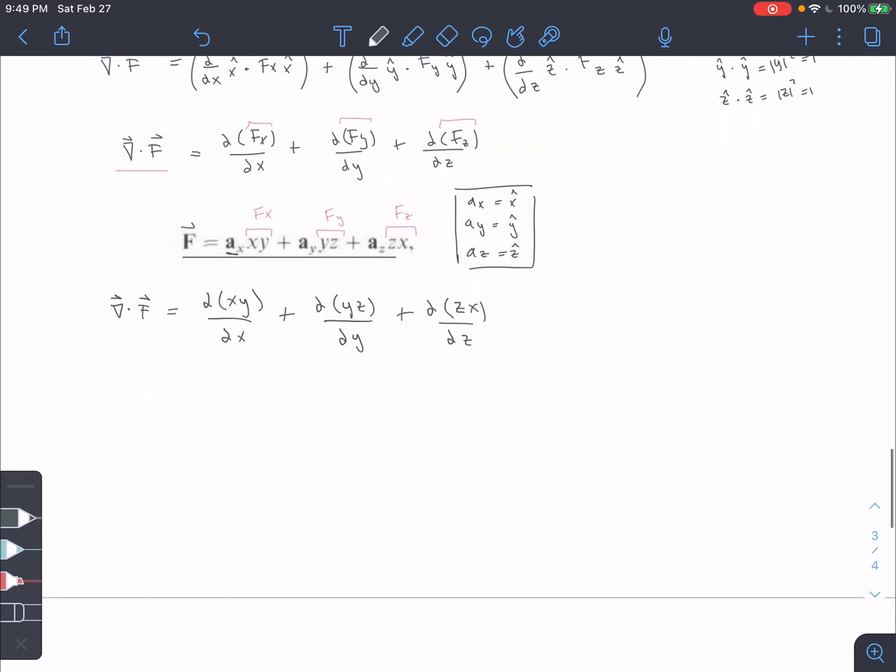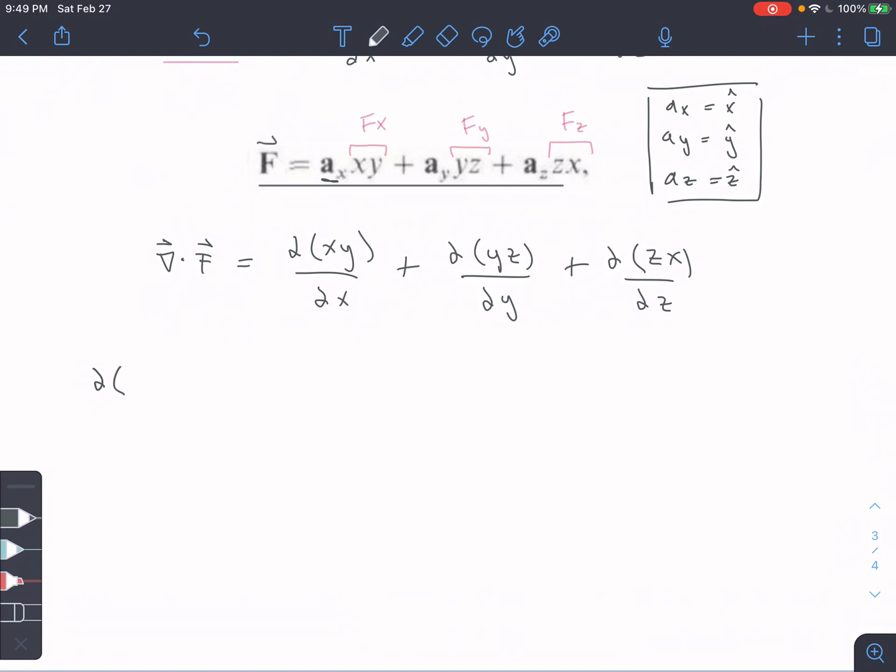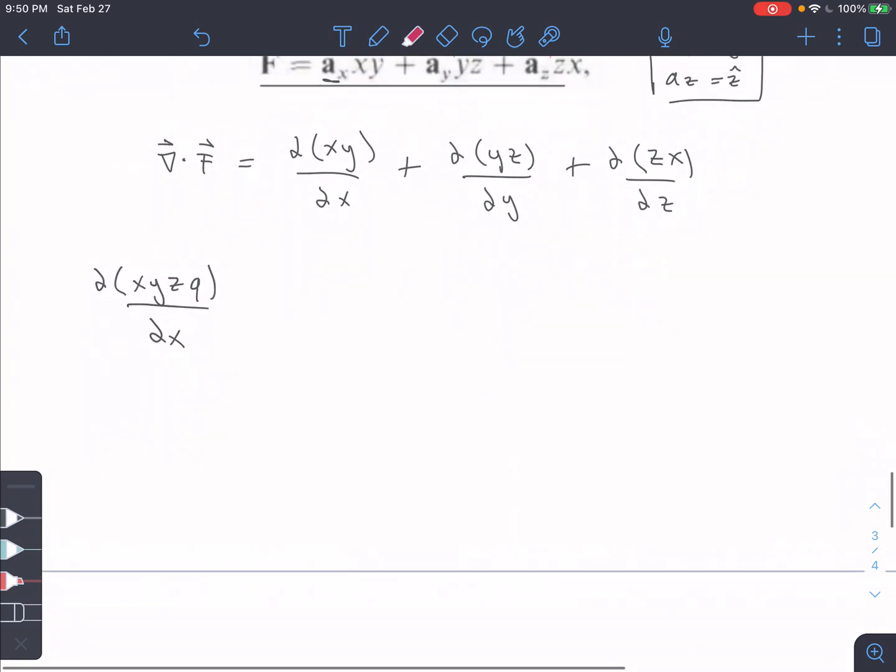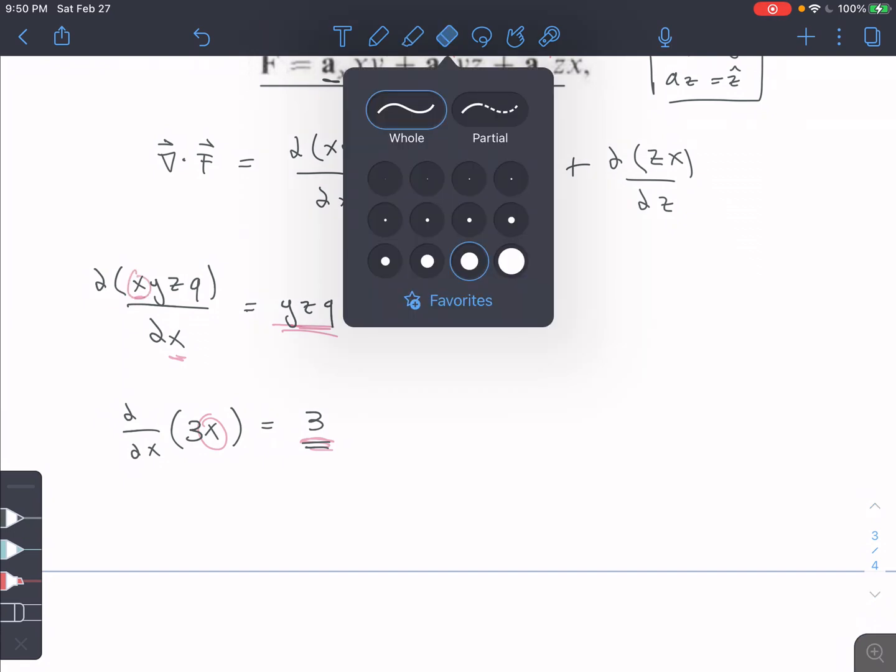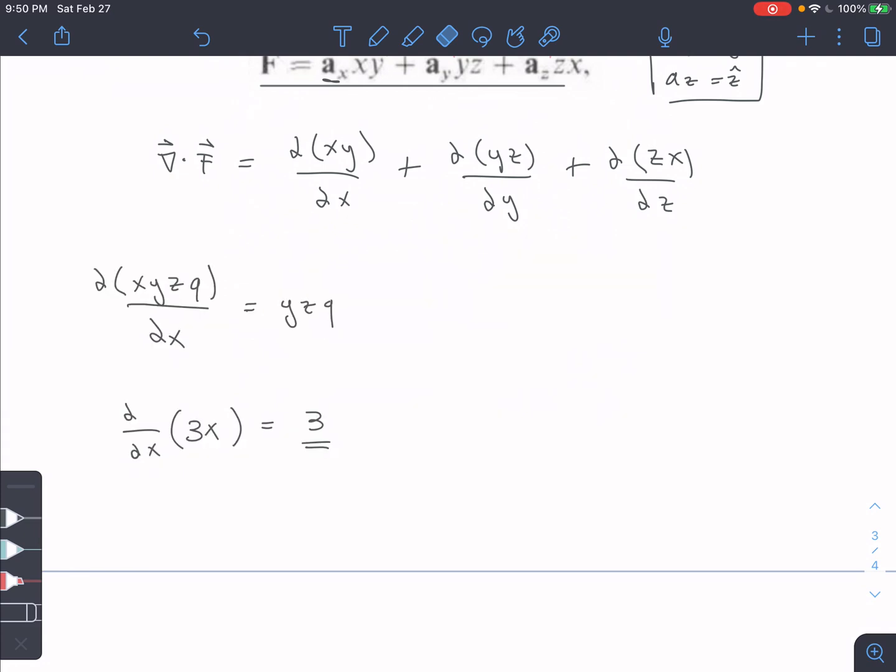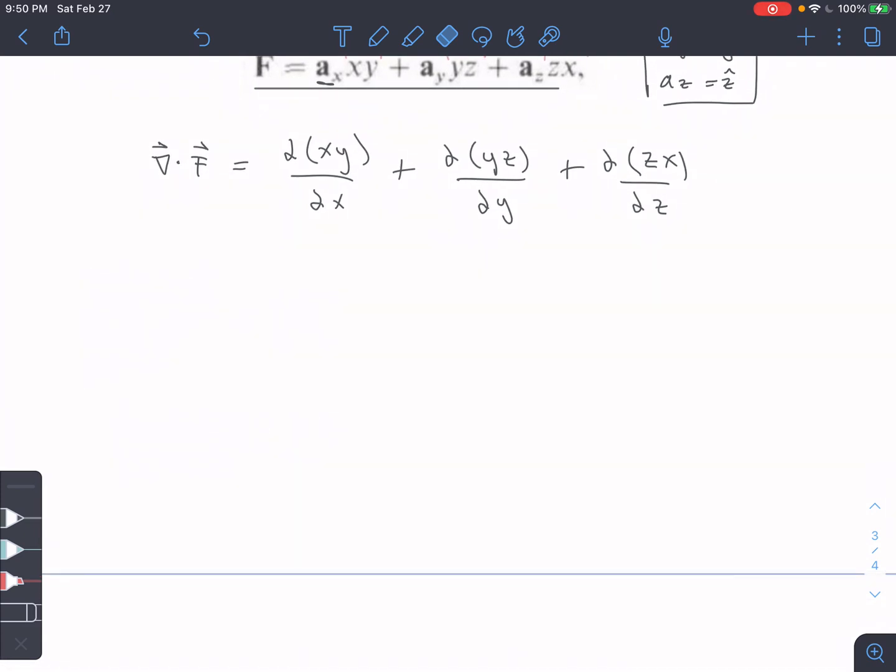Okay, so just a quick note on partial derivatives, because I know people tend to get hung up on those. So let's say I have like xyz q or something with respect to x. Anything that is not the variable in the denominator that I care about, I just treat it like a constant. So that'd be y, z, q. So it's basically the same as the derivative of like, say I have 3x with respect to x. 3 is a constant. When x is the only thing that I care about, I treat everything else like a constant. So we're going to see that happen here.